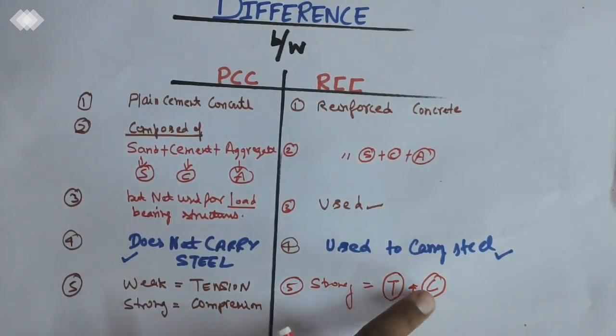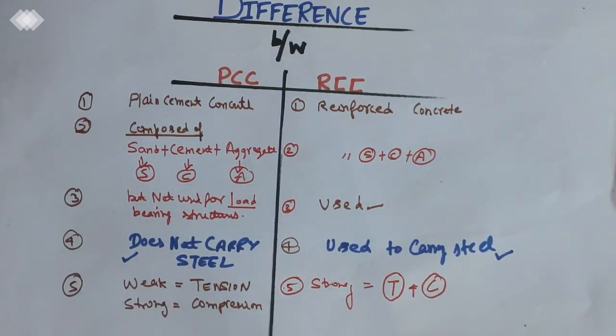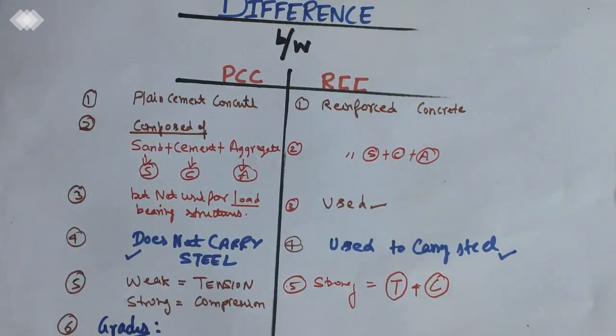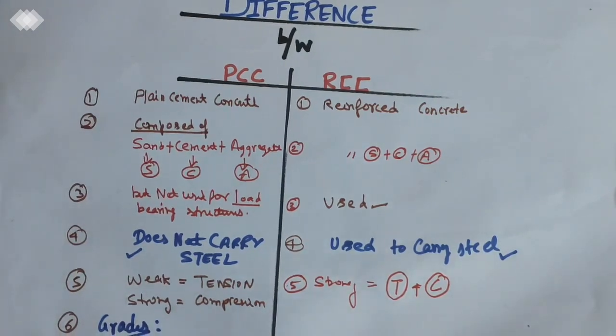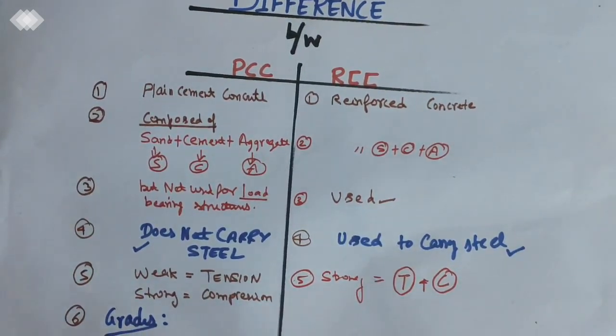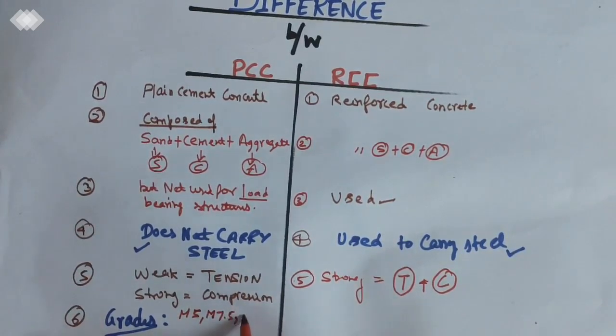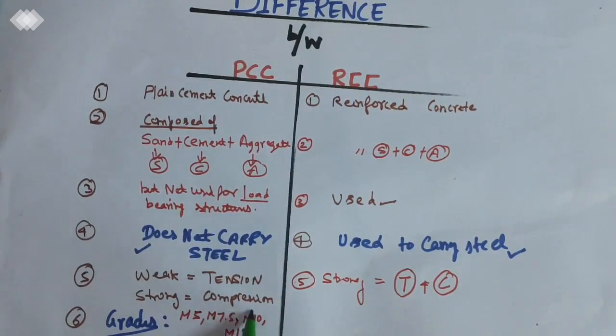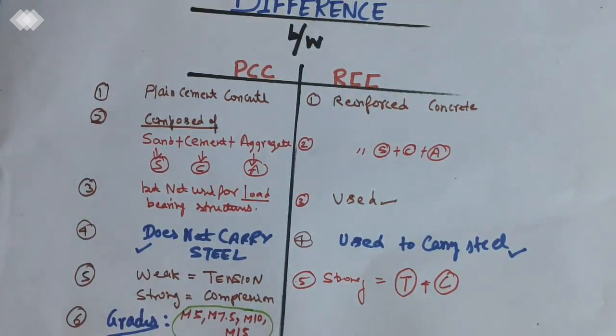Now we will come to the grades. What are the grades we use here for PCC? I will move up. M5, M7.5, M10, M15. So we use all these grades under PCC: M5, M7.5, M10, M15.